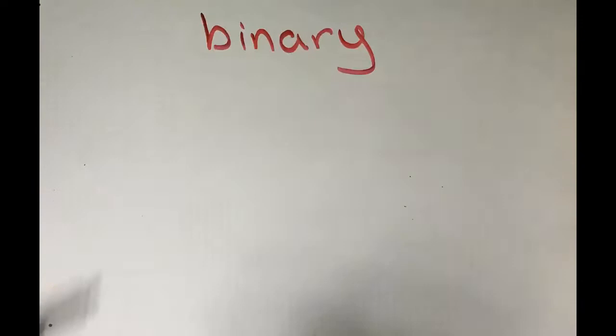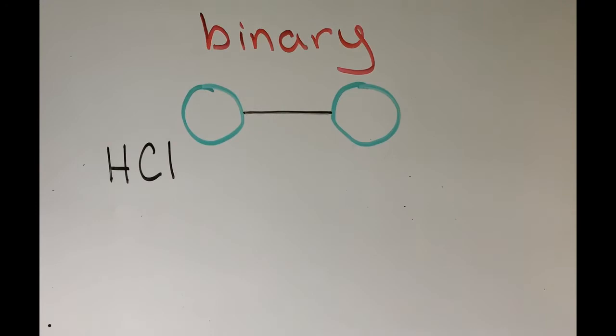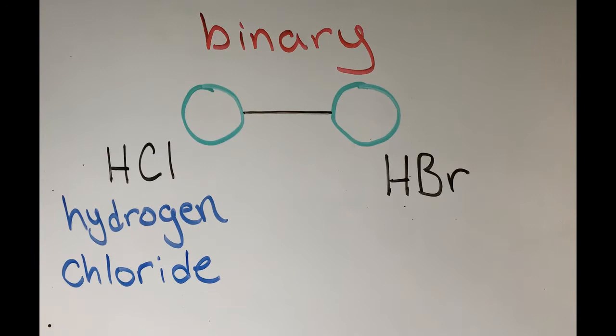So they are made of only two atoms. Some examples are HCl and HBr. HCl is called hydrogen chloride. This should sound familiar to you because this is the same way that ionic compounds are named.